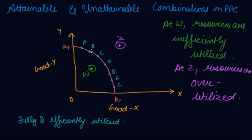So, this is not again the attainable combination of PPC. These are the combinations on the PPC that are attainable. Below and above the PPC are unattainable combinations.